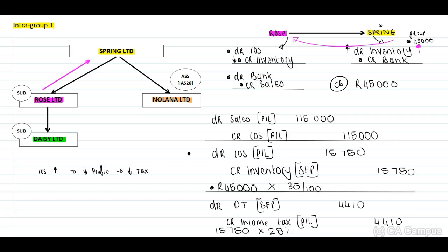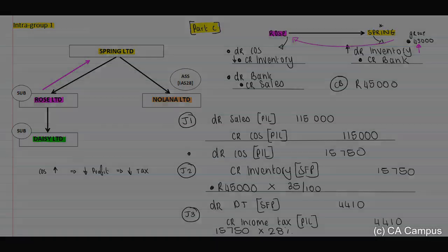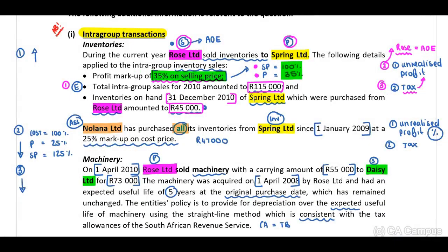This will be journal entry number one, journal entry number two, and journal entry number three. We are currently completing part C of the requirement and have completed intra-group transaction number one. Let's move on to our next intra-group transaction.